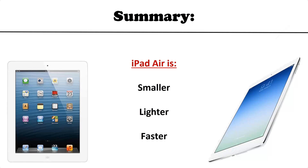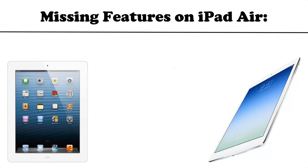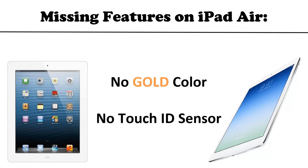So the real differences between the two iPads are weight, dimensions, and processing power — everything else, like screen size, screen resolution, and battery life, is essentially the same. Both iPads also use the Lightning connector. Notably, the iPad Air does not come in gold, nor does it include a Touch ID sensor like the iPhone 5s, so those two features some people were expecting won't be there.